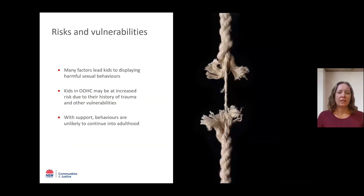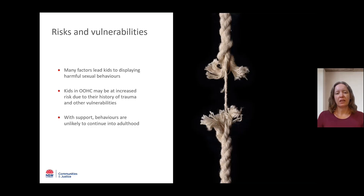There are many reasons that kids develop harmful sexual behaviours. Research shows that childhood trauma is a significant risk factor. This might include repeated distressing experiences like physical abuse, domestic and family violence, neglect, being sexually abused, exposure to sexual activity of others, and exposure to sexually explicit material. Other identified risk factors include family adversity issues such as low socioeconomic status, parent and caregiver instability, homelessness, parental substance abuse and removal from parents.